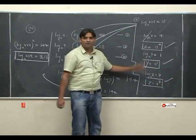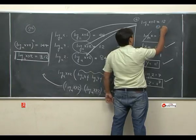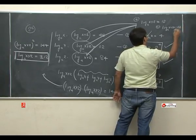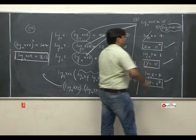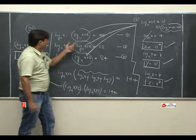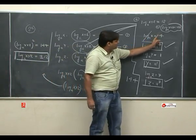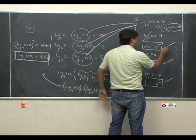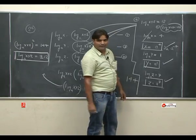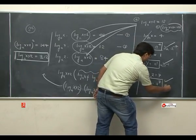अभी एक और sign है — taking minus sign. Minus 12 consider करेंगे: log XYZ base A = −12. तो first equation: 48 ÷ (−12) = −4 → log X base A = −4 → X = A^(−4). इसी तरीके से Y = A^(−1), Z = A^(−7). Final answer with minus sign.